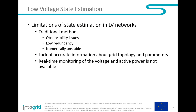Another problem — a limitation on the low voltage grid — is state estimation. With traditional approaches, you have observability issues. Smart meters collect all data but only provide it once per day, usually at end of day — a critical limitation if you want to know the operating conditions in real time. You have low redundancy: if one smart meter fails, you lose that measurement. There is also numerical instability because you often lack the network topology, or the topology data has many gross errors from field mapping.